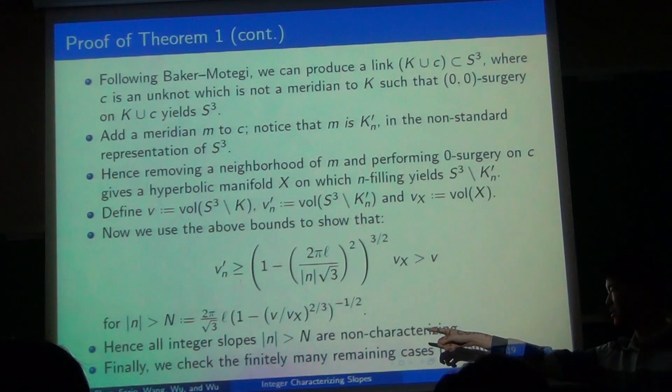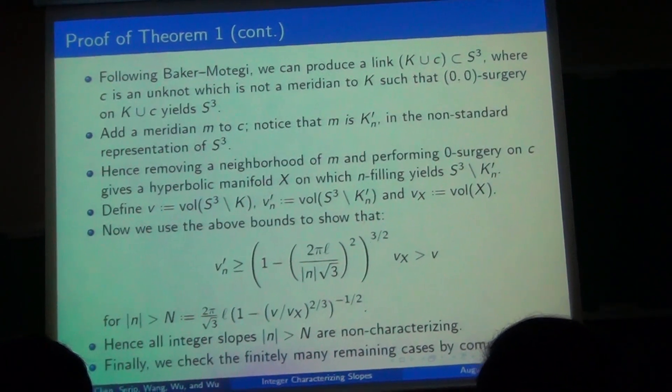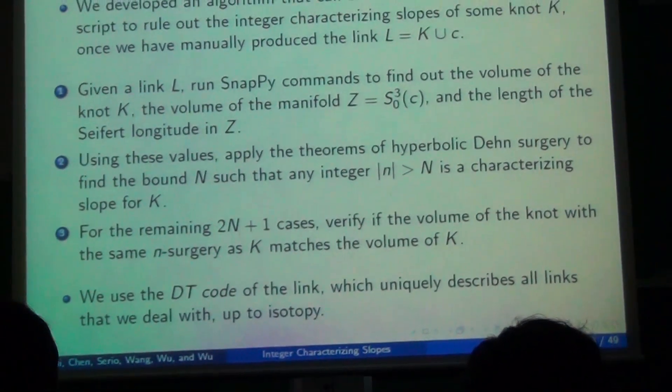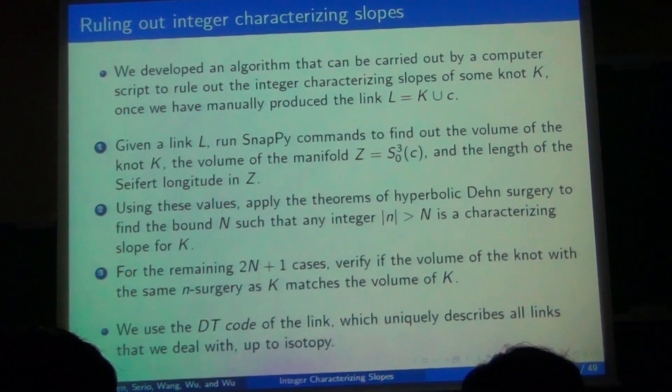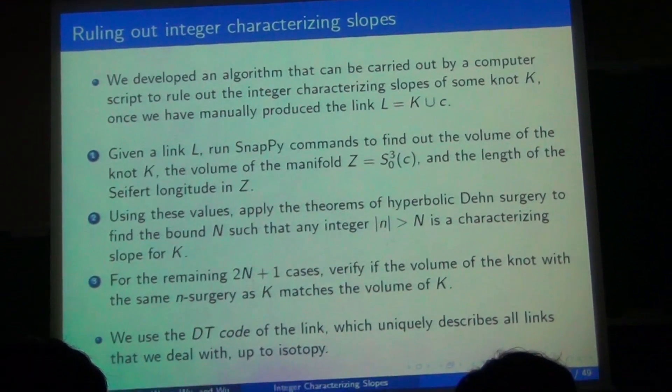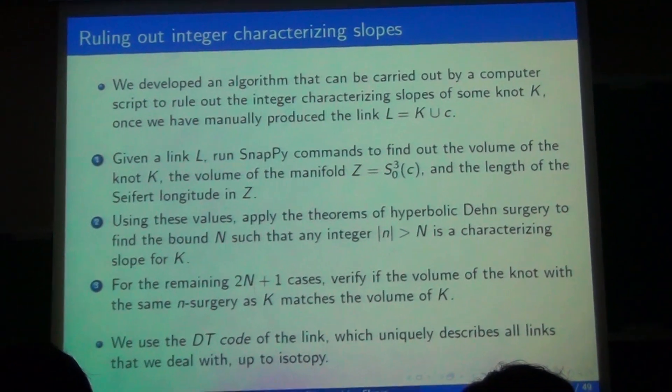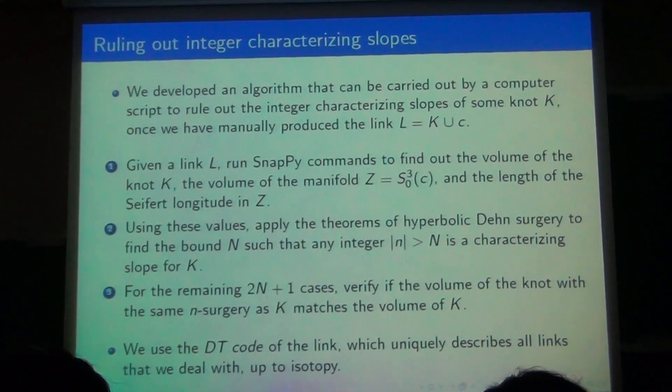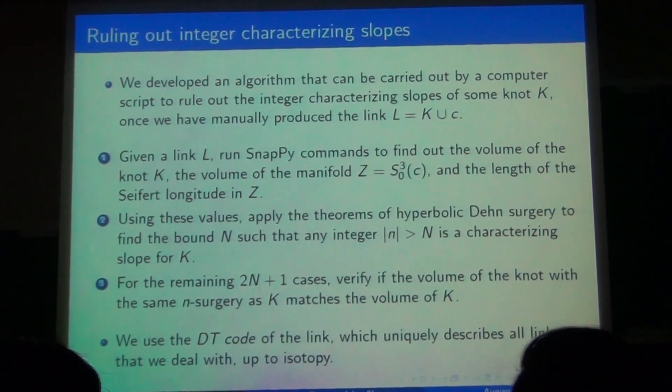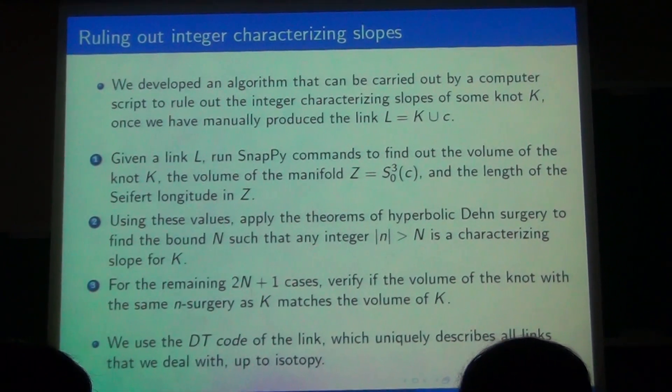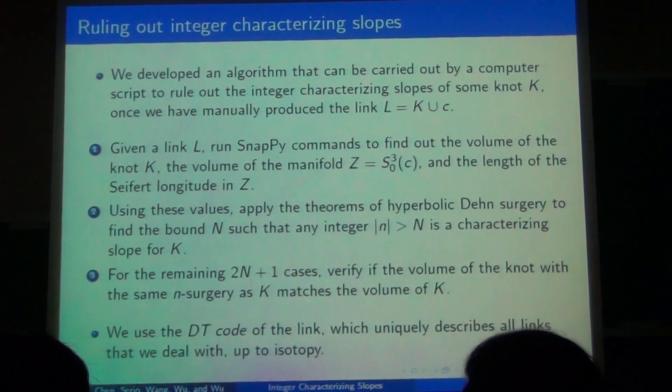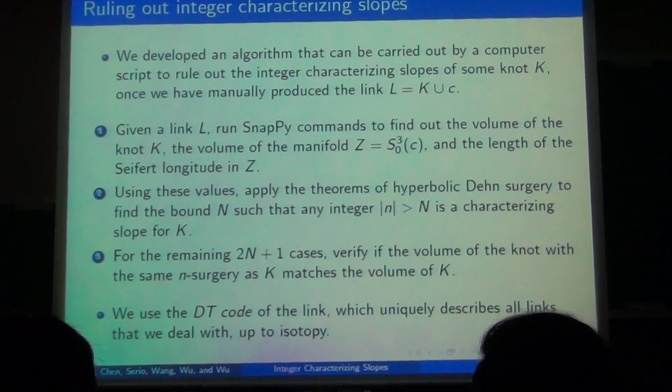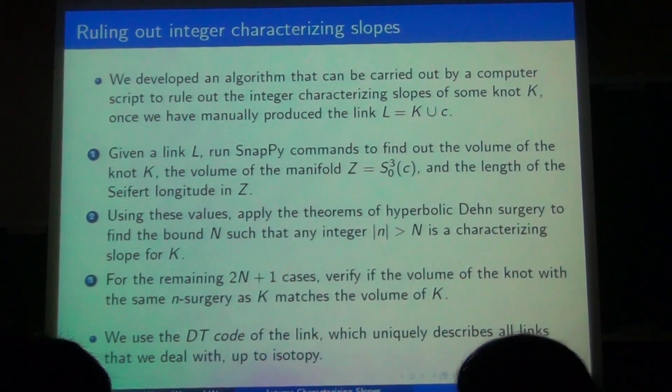And it turns out it's possible to do this for absolute value of n greater than this big N here. So that means that all integer slopes, absolute value of n greater than N, are not characterizing. So that means there are only finitely many cases to test. So even though there are only finitely many cases to test, sometimes it's a lot to test those 2N plus one cases for each knot. So we just wrote a simple computer script that can do that. We use a software called SnapPy that is able to calculate the hyperbolic quantities that I mentioned. And the script simply prompts for those quantities, then calculates the bound, and writes a text file that's going to test all the 2N plus one cases. And we are able to, by analyzing the results, conclude our theorem one just by experimenting. And that includes the proof of theorem one.